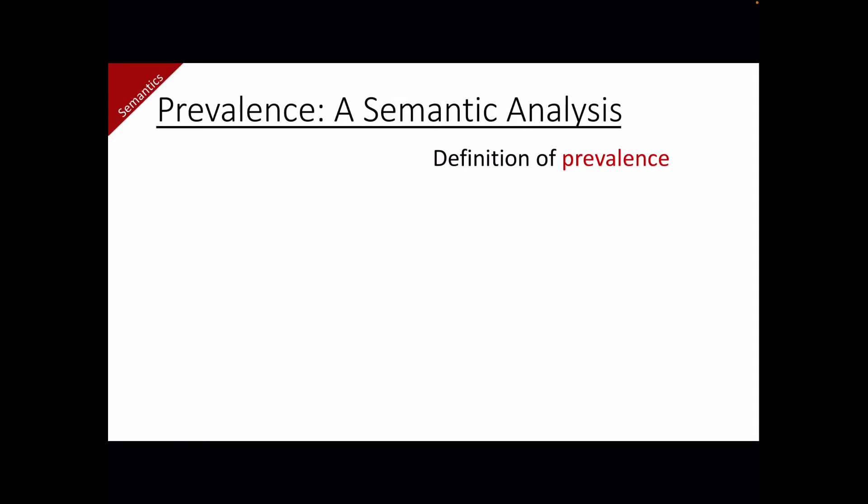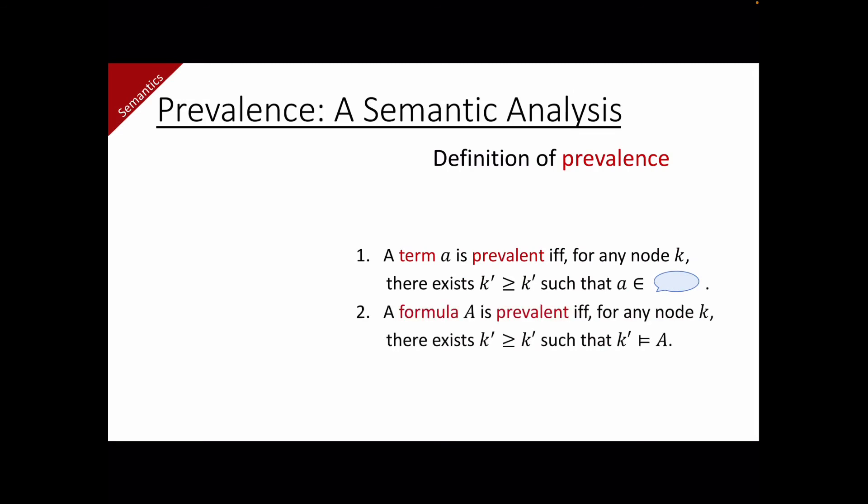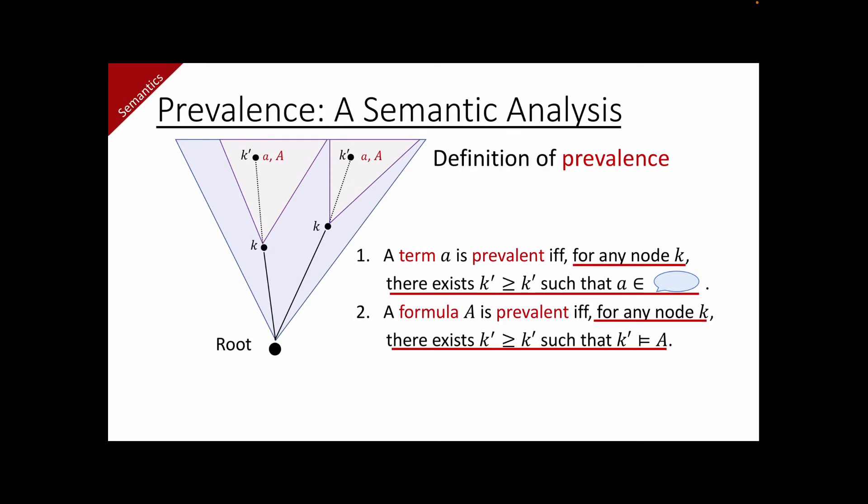Now, I'm going to introduce the definition of prevalence. I'm going to define prevalence of a term and prevalence of a formula. A term or a formula is prevalent if and only if for any node k there exists another node at which the term or the formula exists.